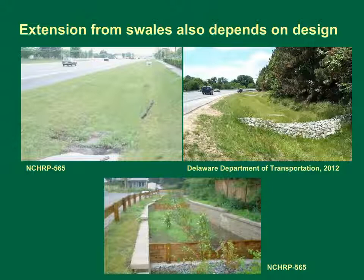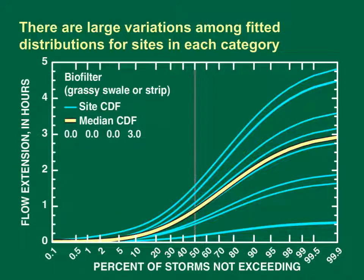If the groundwater table rises above the swale floor, then flow extension may represent the groundwater recession time. This graph shows the fitted cumulative distribution functions for the trapezoidal distributions for hydrograph extension at eight swale monitoring sites and the distribution that would occur if the median of each statistic were selected. There are large variations in fitted distributions among sites in every category. The vertical axis is the flow extension in hours on a linear scale, and the horizontal axis is a probability scale indicating the percentage of storms with flow extensions less than or equal to the given value. The maximum values range from 0.5 to 4.75 hours for these swales. The blue lines are distributions from data at individual sites, the yellow line is the distribution calculated using the median of site statistics — a right-skewed triangular distribution.